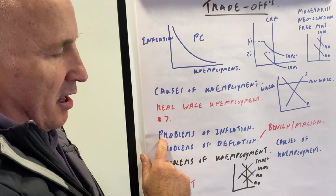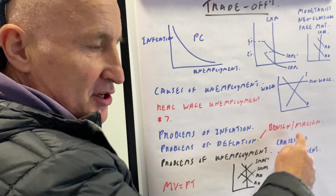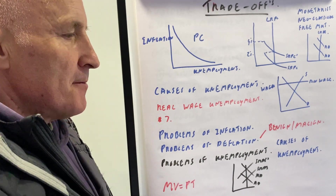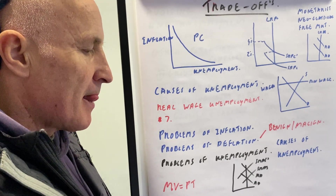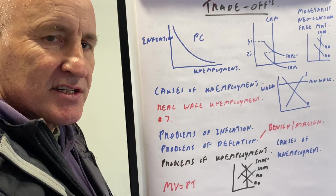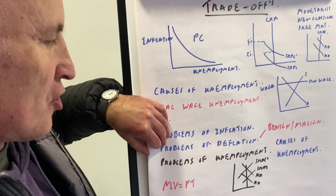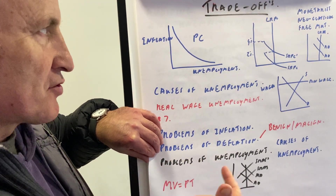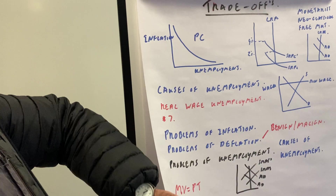We covered inflation — losing international competitiveness — and problems with deflation: bad deflation causes a lack of demand in the economy, people stop spending, and you cannot effectively decrease your interest rate below zero. If you've got minus two percent inflation, even with a zero interest rate you still have a two percent interest rate in real terms. We also covered MV = PT, causes of unemployment, and causes of inflation — that was the whole 32-minute video for week one.